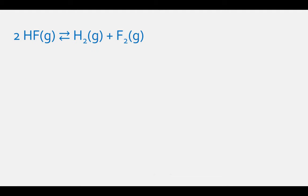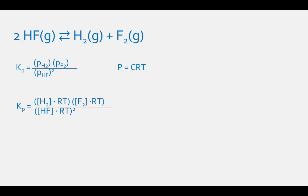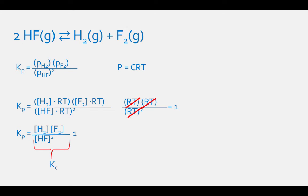Another example: 2HF(g) ⇌ H₂(g) + F₂(g). Write the Kp expression: Kp equals the partial pressure of H₂ times the partial pressure of F₂, divided by the partial pressure of HF squared. Substituting pressure equals concentration times RT and canceling, we get RT times RT divided by RT squared, which equals 1. So the final equation is just the Kc expression for this reaction, and Kp equals Kc.